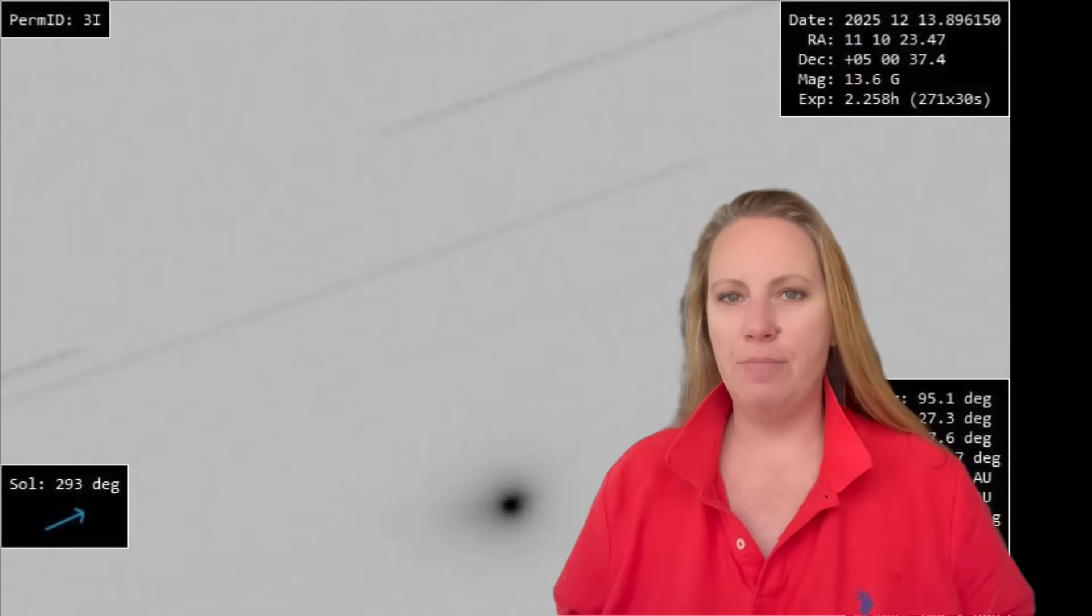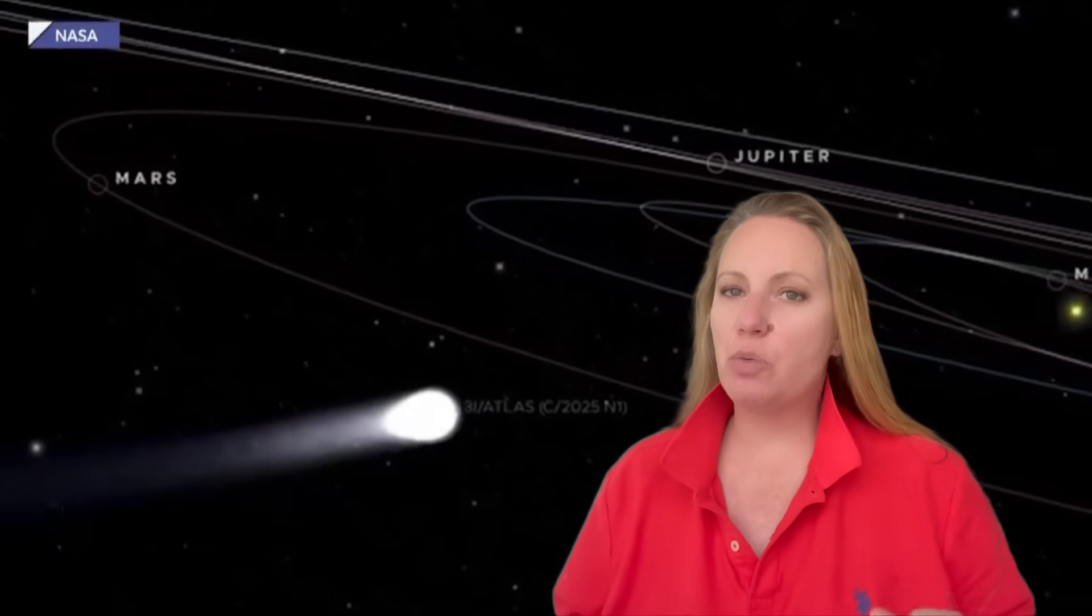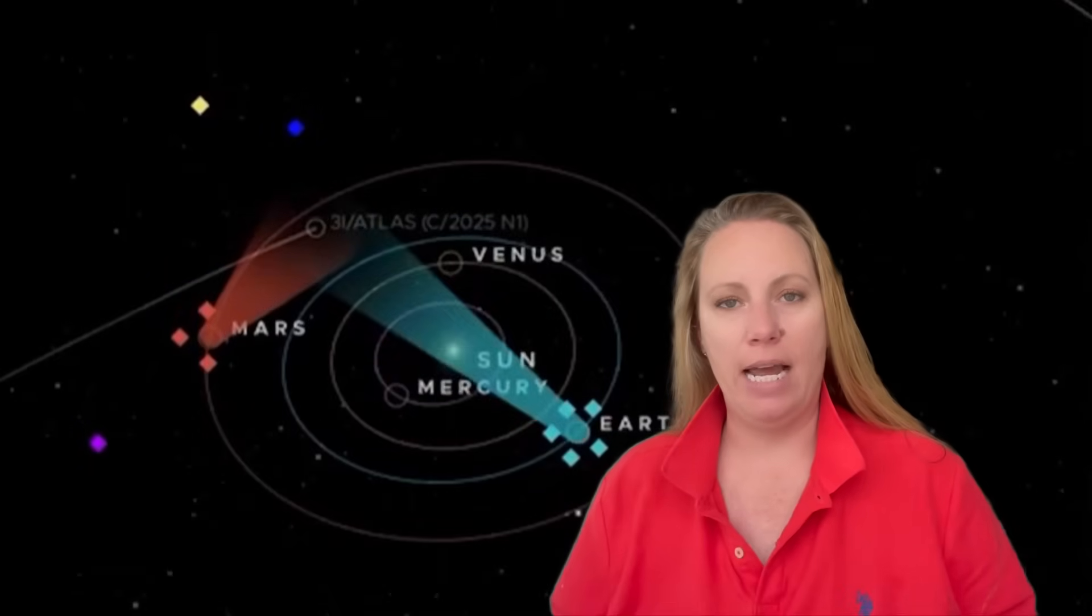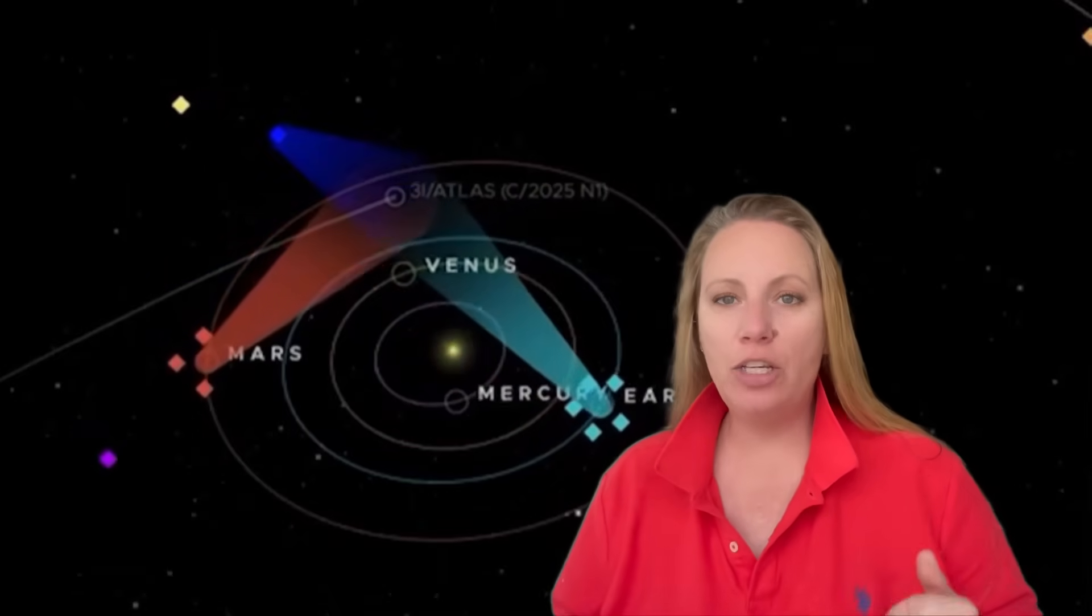3i Atlas came from almost the same direction in the sky as a very unusual gamma ray outburst. And what is really great, we have a lot of astronomers looking at 3i Atlas right now, and we are documenting all these anomalies, and we're at 15 at least right now.